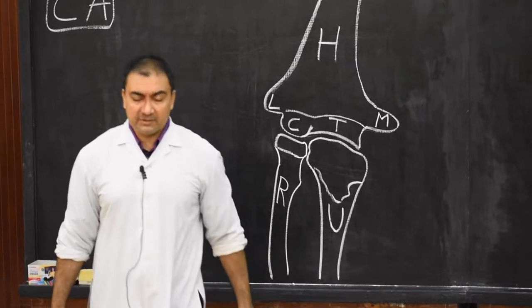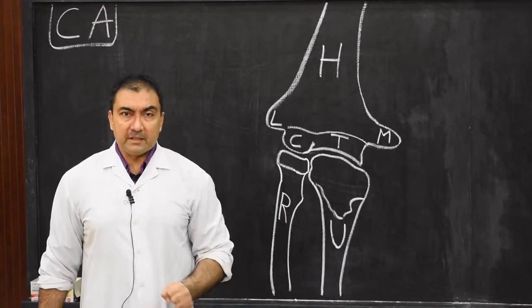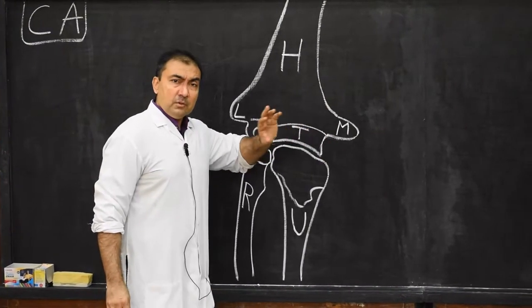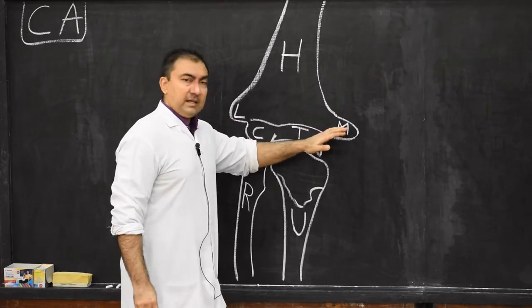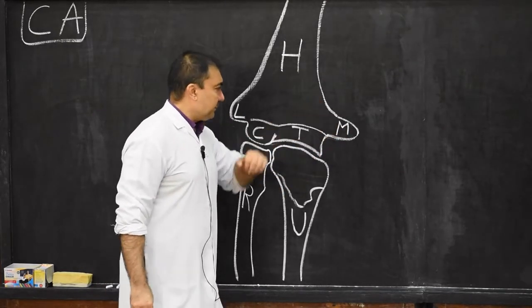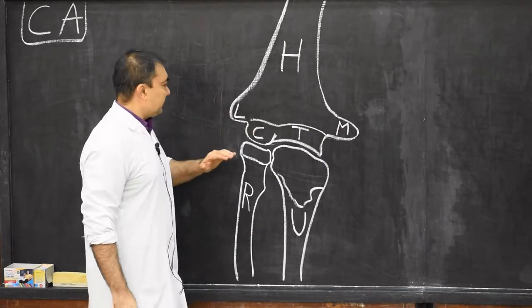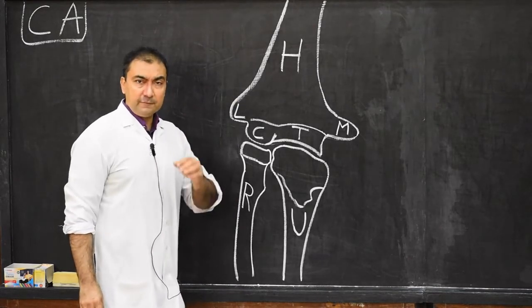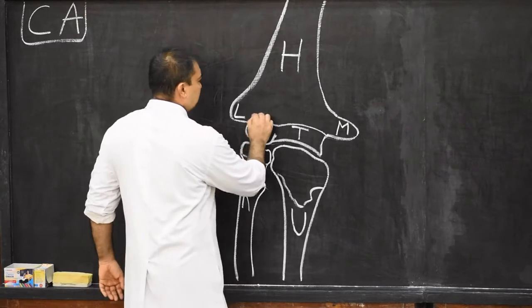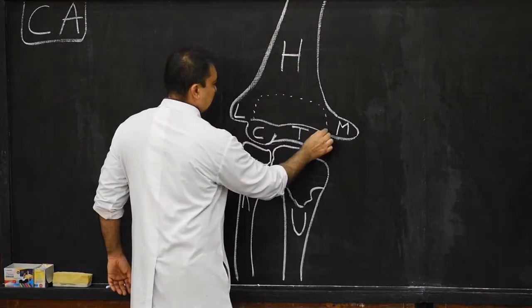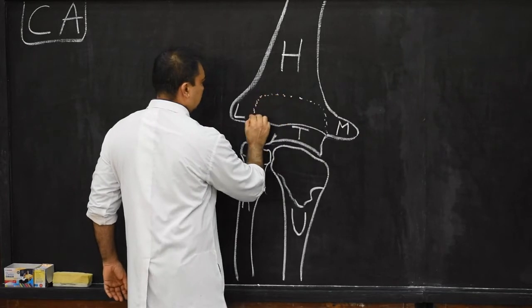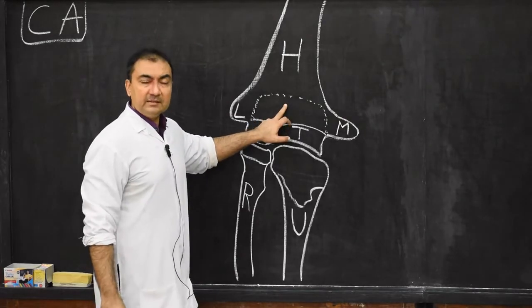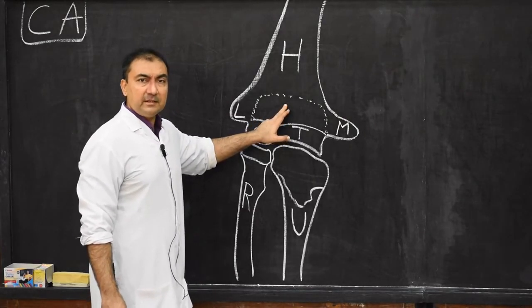The entire cubital anastomosis is divided into five different compartments. First compartment: in front of the medial epicondyle. Second compartment: behind the medial epicondyle. Third compartment: in front of the lateral epicondyle. Fourth compartment: behind the lateral epicondyle. And the fifth compartment is where the olecranon fossa is present — shown in dotted format because it is located posteriorly. Anastomosis above the olecranon fossa is the fifth compartment.